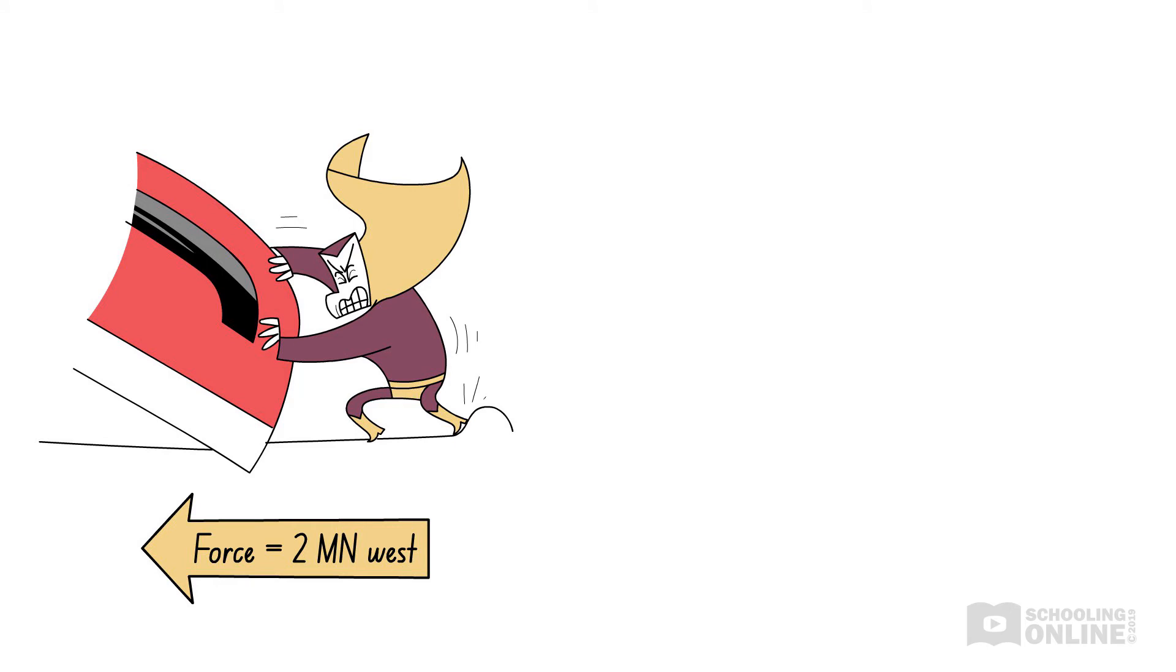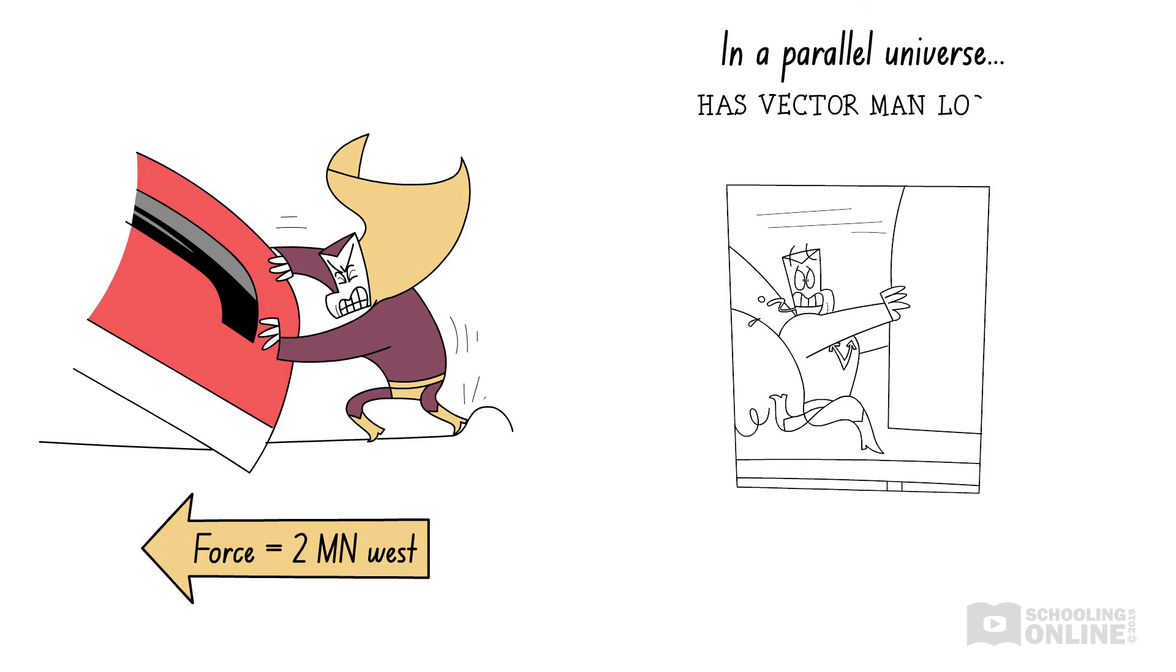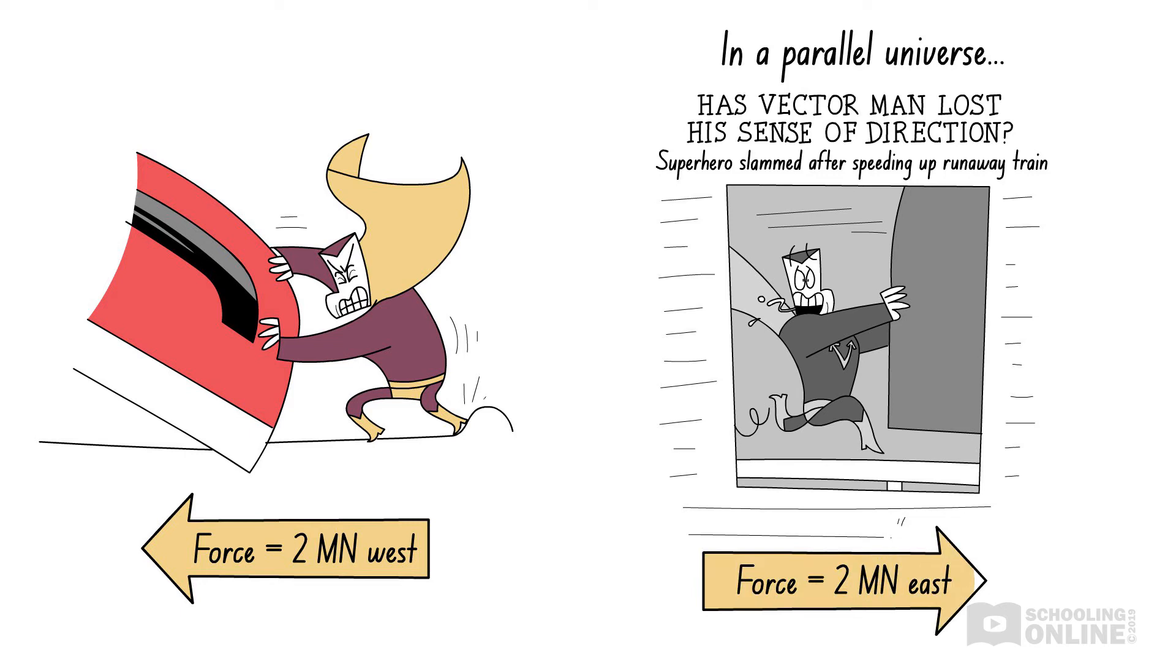Let's take a closer look at the events that transpired. Vector Man pushed west against the train to slow it down. He wouldn't have saved everyone if he'd pushed it in the wrong direction. For example, if he pushed the train east, its speed would increase. That wouldn't help at all. As you can see, Vector Man needed to push the train in the right direction. Therefore, his force of 2 mega newtons west is a vector, because it includes a direction. In physics, force is always a vector, because it always occurs in a particular direction.